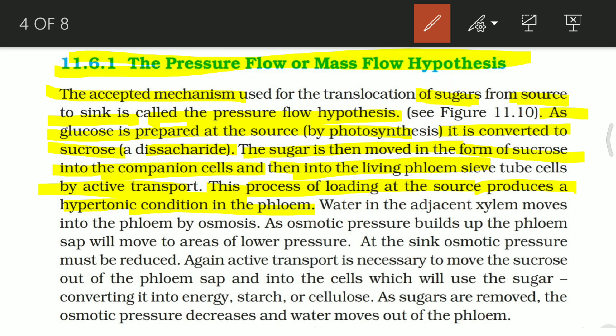Water in the adjacent xylem moves into the phloem by osmosis, causing osmotic pressure to build up. This pressure moves the sap toward areas of lower pressure — the sink area where food is needed. At the sink, active transport is necessary to move sucrose out of the phloem sap into the cells, where it is used by converting it into energy, starch, or cellulose.